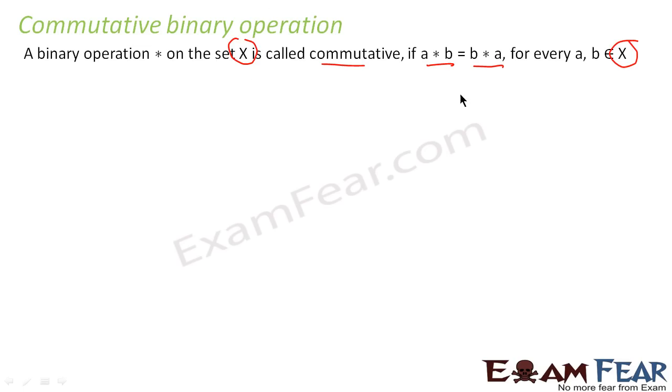If this is commutative, a star b is equal to b star a. Please note, all operations are not commutative. For example, when I say a divided by b, this is not equal to b divided by a, so division operation is not commutative.